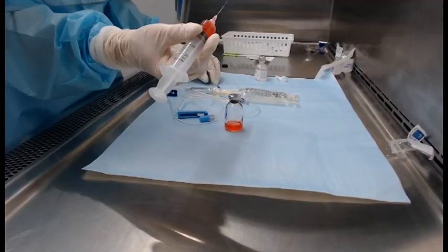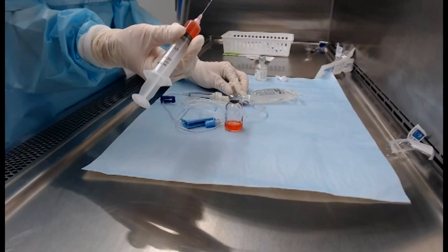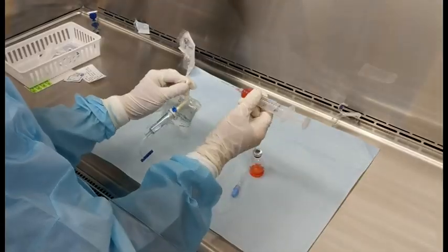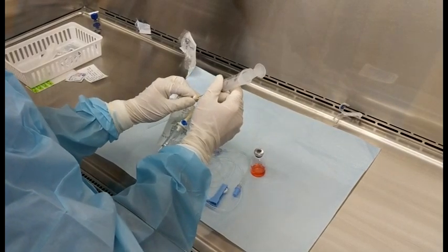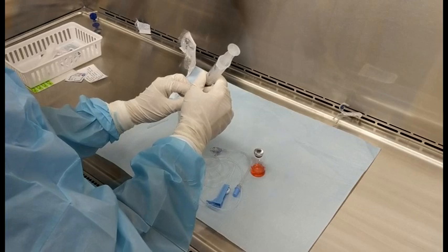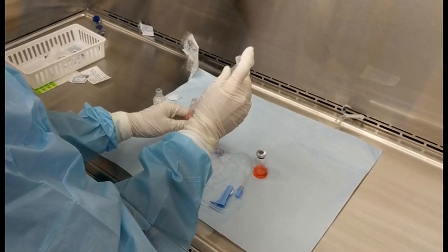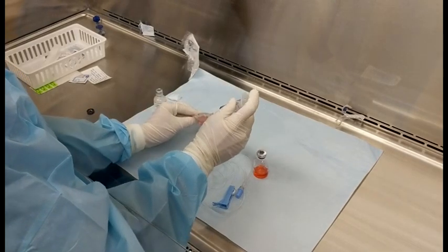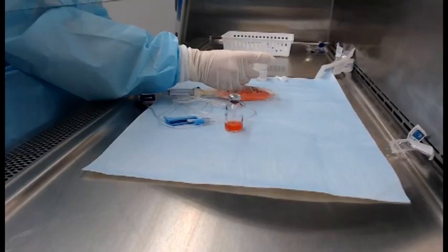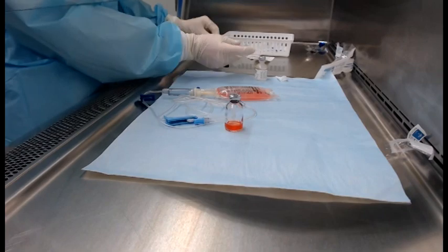Keeping the syringe in my right hand, I'm going to grab the port of our saline bag and pull it up, keeping it firm. Now I'm going to enter the port and inject my drug into the bag. Remove, and again, using the scoop method, recap.